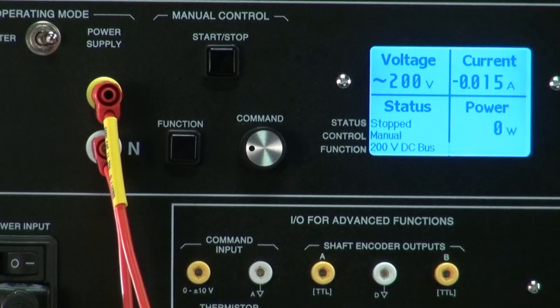200 volts DC bus. This function provides a fixed DC voltage of 200 volts.